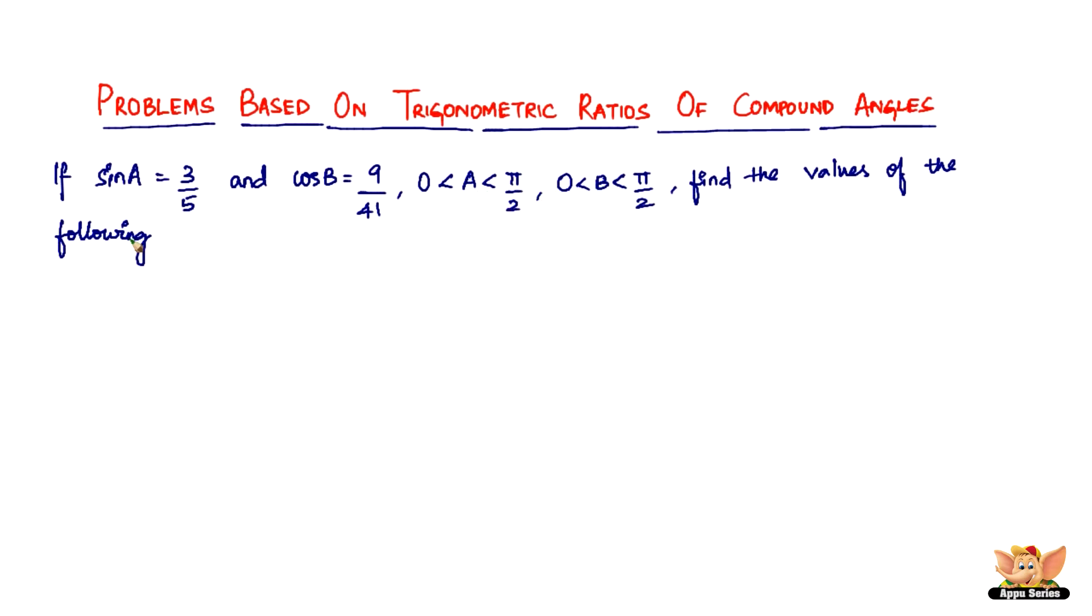Find the values of the following. The first one is sin of A minus B. So what's the value of sin A minus B if you have sin A and cos B? Now that we have sin A and cos B, to find sin A minus B which is sin A cos B minus cos A sin B, we have sin A and cos B. Where is cos A and sin B? We first have to find that.